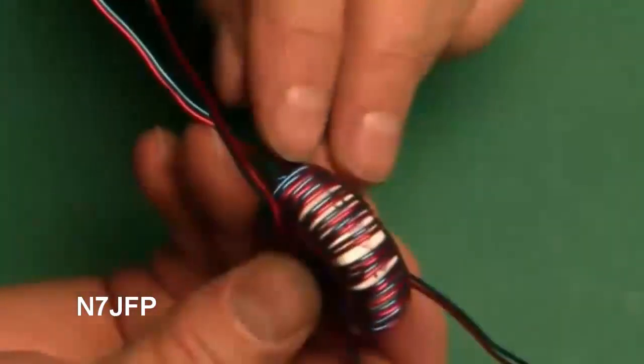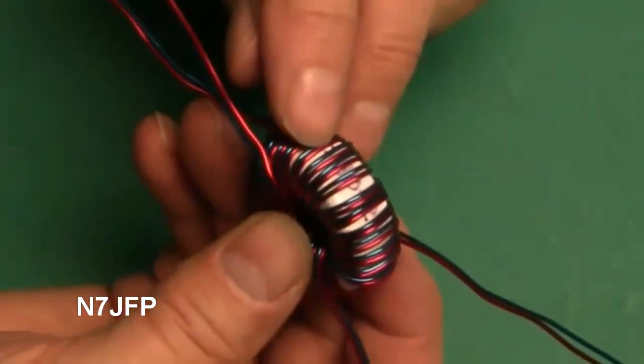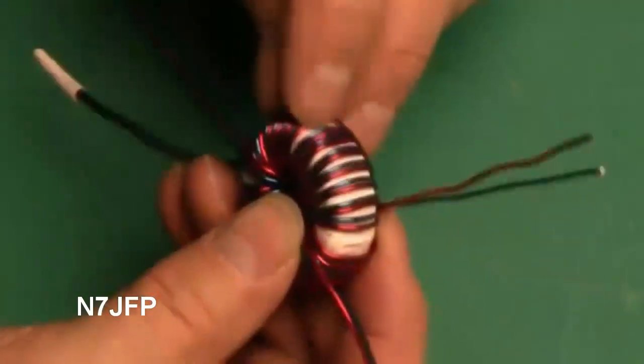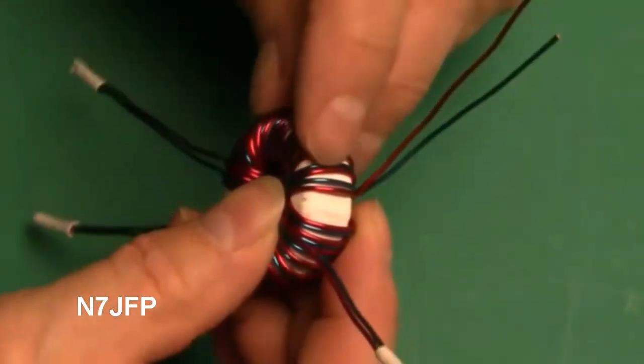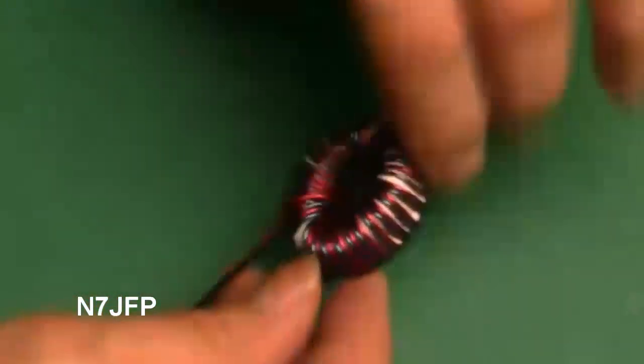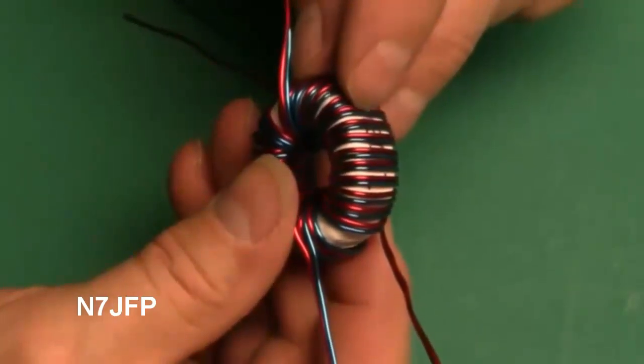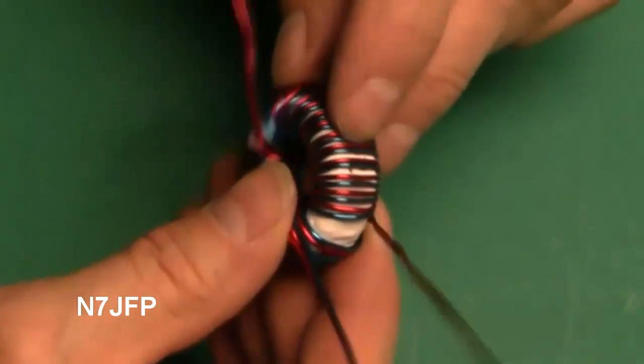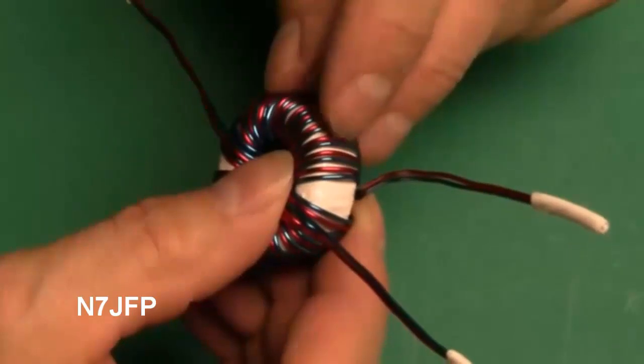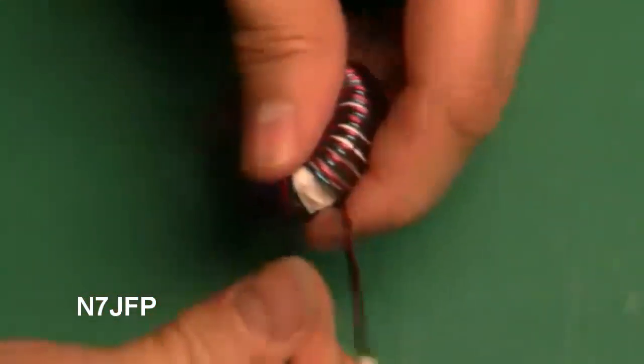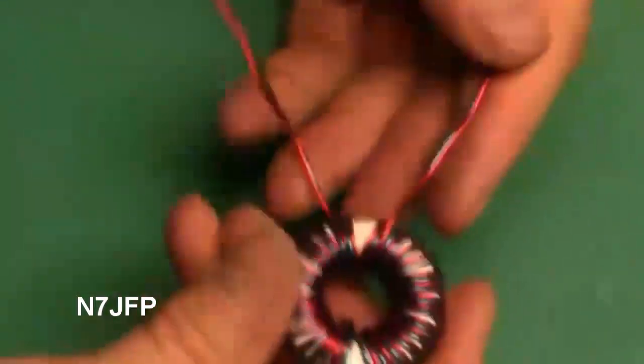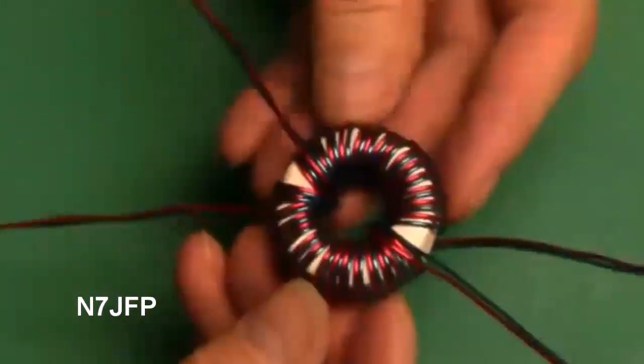Let's count them. One, two, three, four, five, six, seven, eight, nine, ten, eleven, twelve, thirteen, fourteen, fifteen on that side. On this side we have one, two, three, four, five, six, seven, eight, nine, ten, eleven, twelve, thirteen, fourteen, fifteen. Fifteen turns on both sides. There we have it.